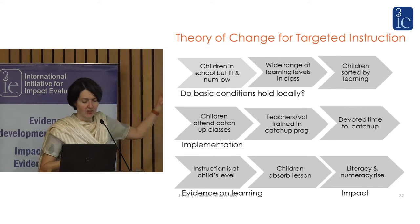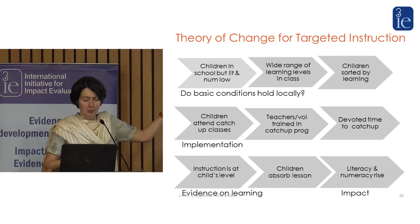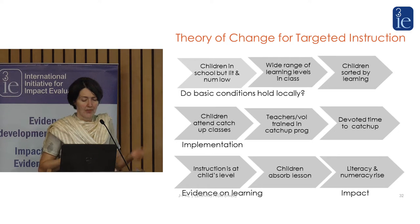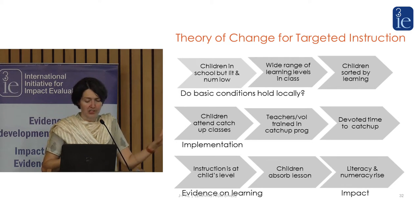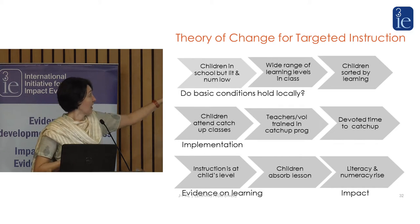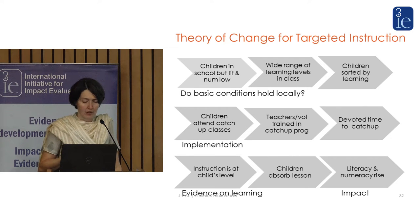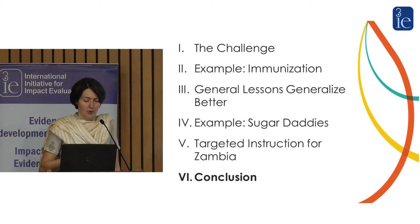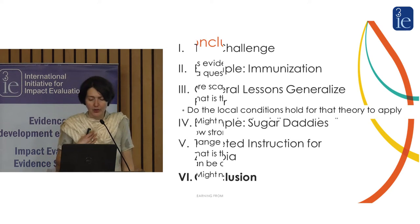Here's the theory of change: children are in school but literacy and numeracy are low. A key part of the theory is that there's a really heterogeneous level of learning in a classroom. We sort children by learning level and the children attend the classes. This is where the program sometimes failed — either children didn't attend or teachers didn't teach the right program. But we're pretty clear that if you do all those things, children will absorb the lessons.